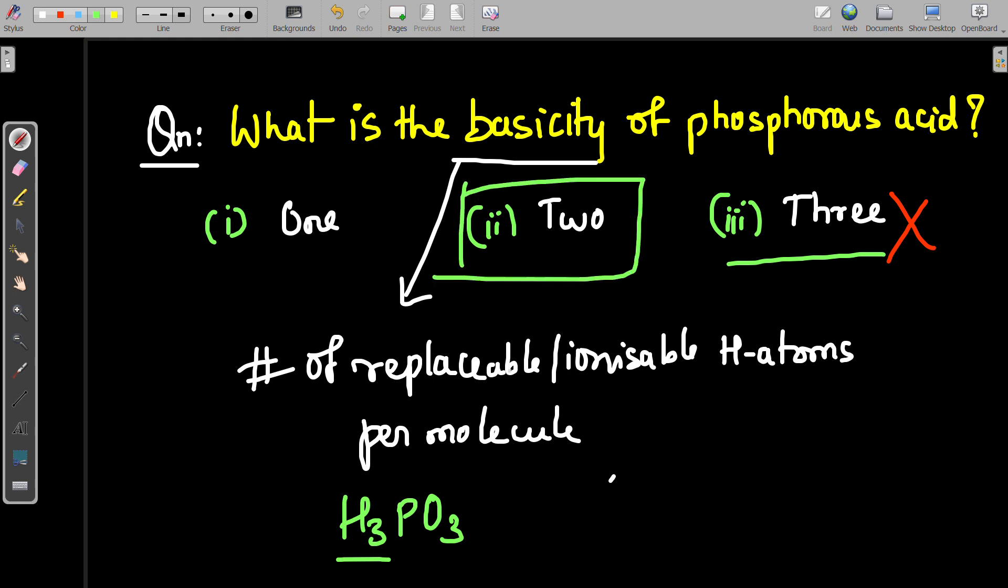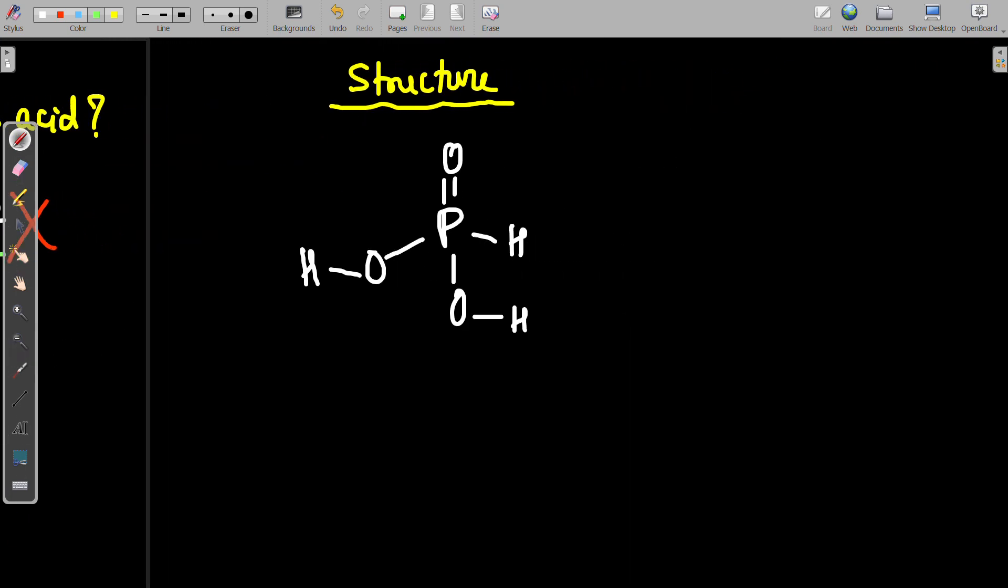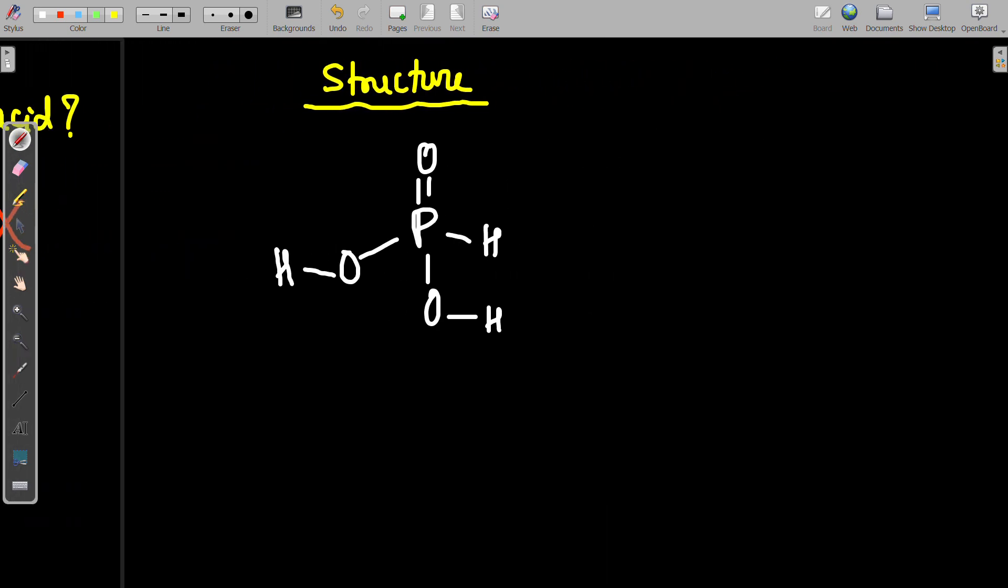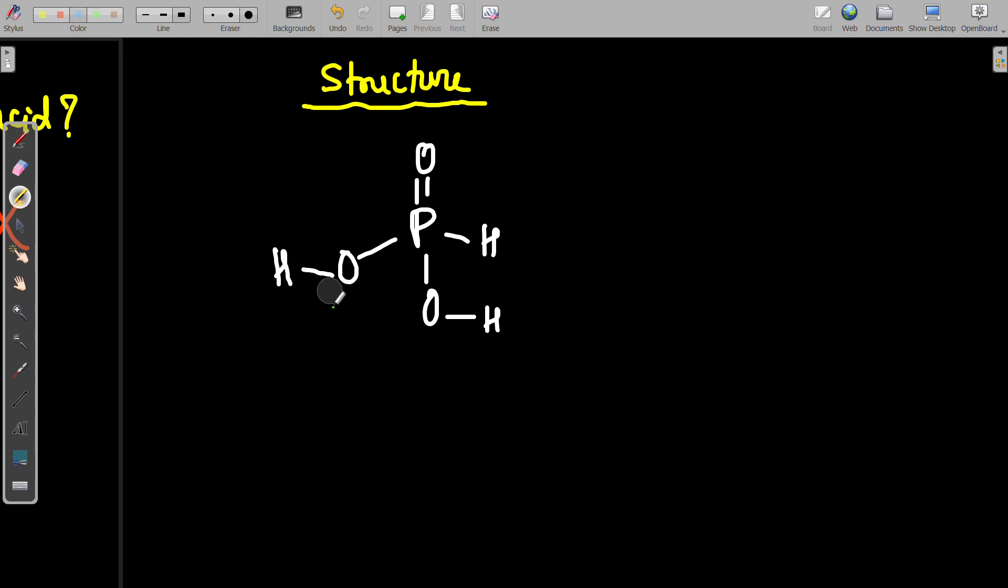How? For that you should know the structure of H3PO3. When you draw the structure of H3PO3, this is the structure. Why is the basicity of this acid two? Because it depends upon the number of replaceable hydrogens.